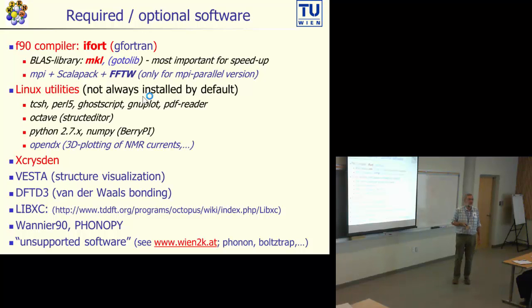We need Perl because only then you have Win2Web. We need ghostscript to view postscript programs, gnuplot, a PDF reader like Acrobat. We need Octave, Python in a decent version, and if you want to use this you would need OpenDX, but this is not really necessary.